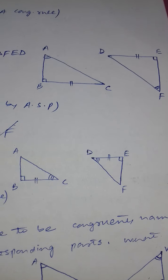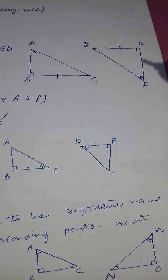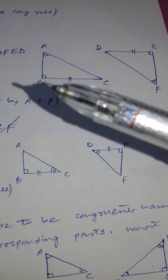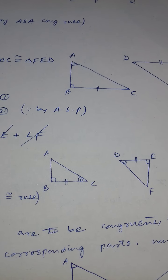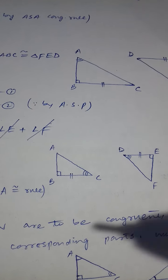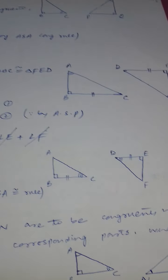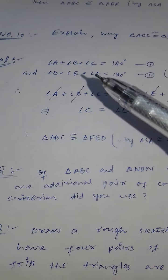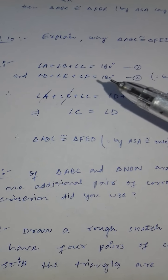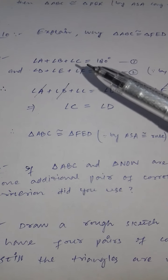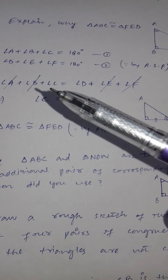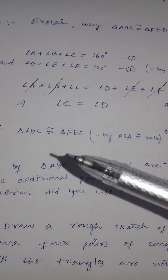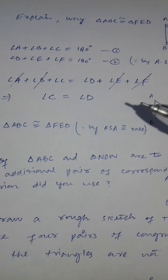Question ten: explain why triangle ABC is congruent to triangle FED. From the figure, angle B = angle E = 90°, and one side is equal. However, angle C equal to angle D is not directly given — it's hidden. To find it, apply the angle sum property: angle A + angle B + angle C = 180° and angle D + angle E + angle F = 180°. Since angle A = angle F and angle B = angle E (both 90°), cancelling these from both equations gives angle C = angle D.